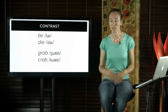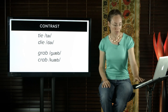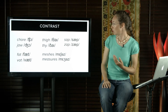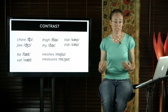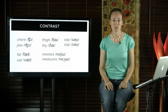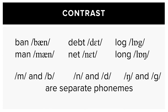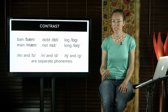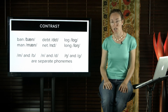Adding voicing to one sound in a word can change the meaning. Voicing is also distinctive for affricates and fricatives: 'chore' versus 'jaw', 'thigh' versus 'thy', 'sap' and 'zap', 'fat' and 'vat', and 'meshes' and 'measures'. In the same way, the feature of nasalisation is also contrastive in English — 'ban' and 'man', 'debt' and 'net', 'log' and 'long'. These minimal pairs show that m and b are separate phonemes, as are n and d, and n and g.